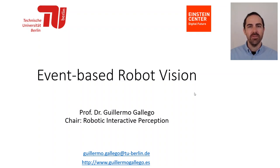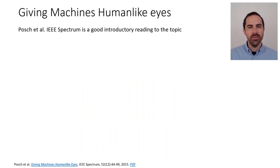Hello, my name is Guillermo Gallego, and in this video I will take a look at the differences between a frame-based camera and an event-based camera from a sampling point of view. It will be high level. A good reference for this is a paper on IEEE Spectrum called 'Giving Machines Human-Like Eyes.'